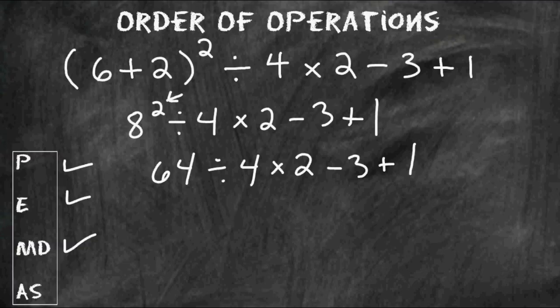The first one of those two symbols to appear from left to right is a division sign. So we have to solve 64 divided by 4, which is 16. We have to bring down the times 2, the minus 3, and the plus 1.